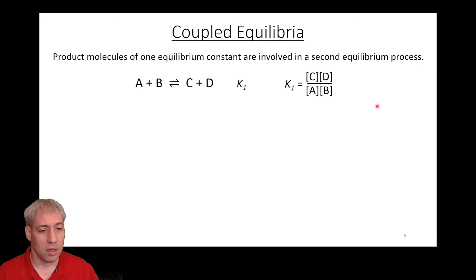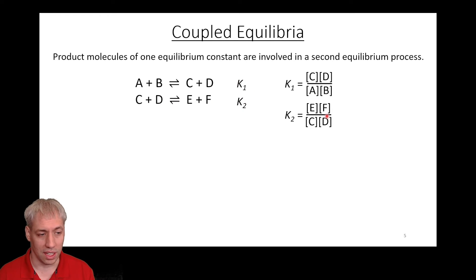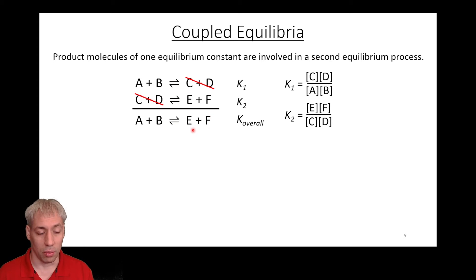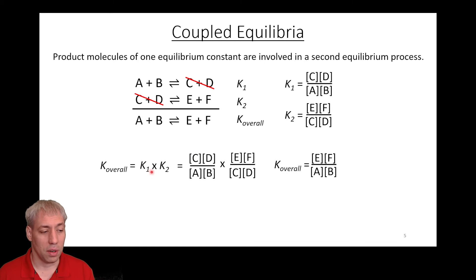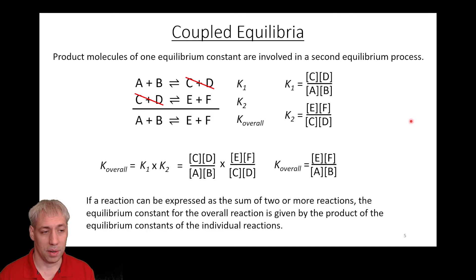We've talked about this idea before, particularly in Chapter 13 when we talked about multi-step reactions. We can have an equilibrium described by K1, another by K2, and we can combine these together to get an overall equilibrium. You can think of this as a two-step process: step one, step two, giving an overall reaction with a K overall value. As we showed previously, K1 times K2 equals K overall — you can combine equilibrium constants to get an overall equilibrium constant.